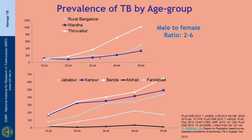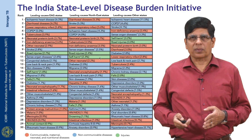The prevalence rate increases as age increases, and the ratio of male to female prevalence is 2 to 6 across various sites, with this ratio also increasing with higher age groups.